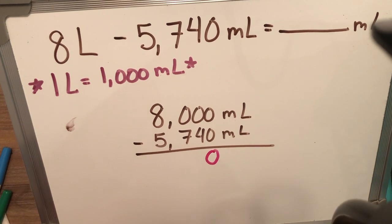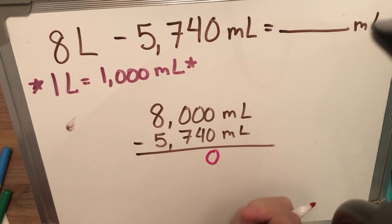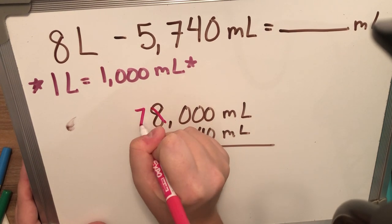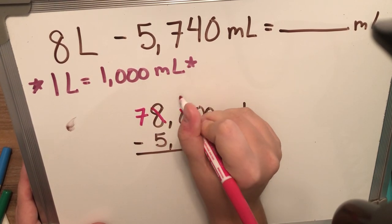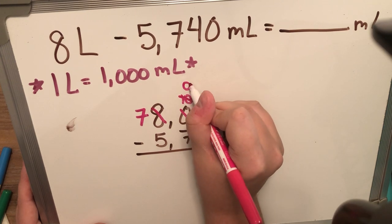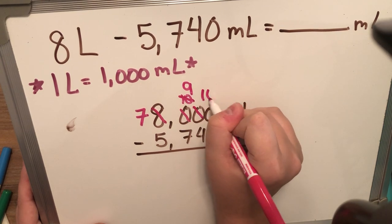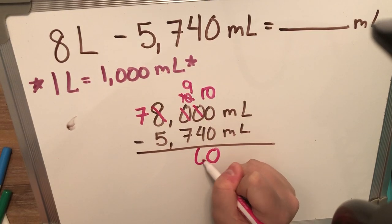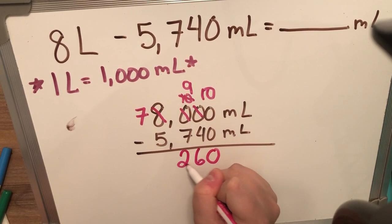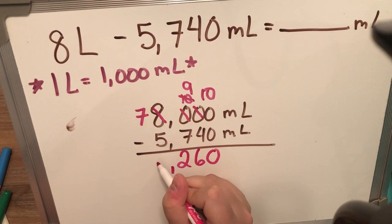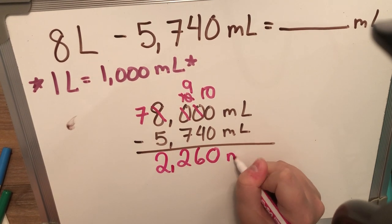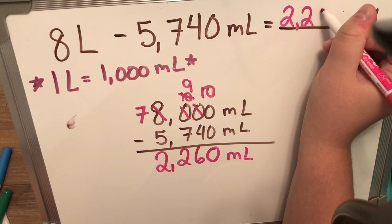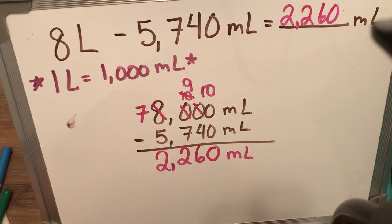0 minus 0 is 0. I can't take 4 away from 0. I can't take 7 away from 0, so I'm going to keep borrowing until I can. This will become a 10, which will really become a 9 because I have to give and borrow back. So, 10 minus 4 is 6. 9 minus 7 is 2. 7 minus 5 is 2. So, I get a total of 2,260 milliliters.